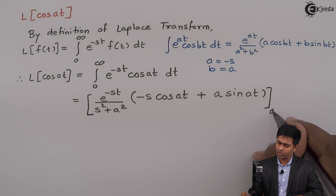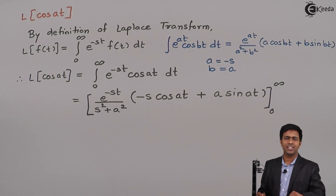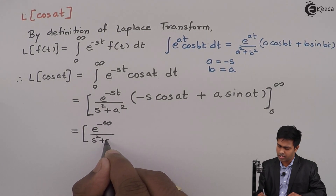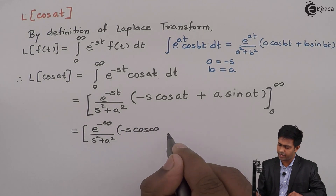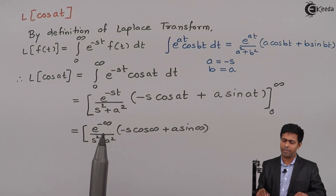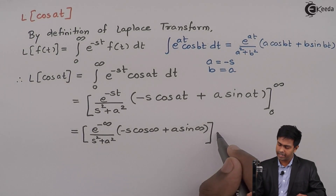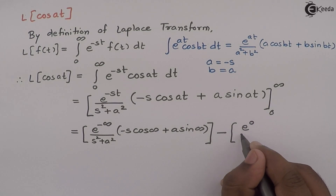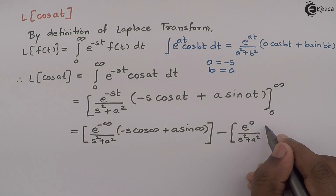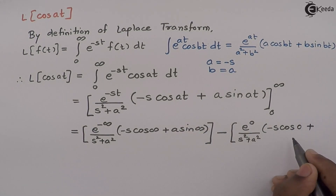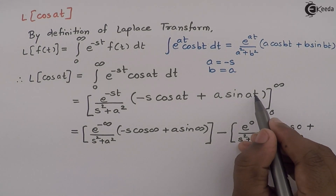Now we substitute the upper and lower limits to evaluate the integration. Substituting the upper limit of infinity: we get e raised to minus infinity divided by (s² + a²) times (minus s·cos(∞) + a·sin(∞)). Then, subtracting the lower limit of 0: e raised to 0 divided by (s² + a²) times (minus s·cos(0) + a·sin(0)).